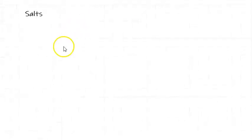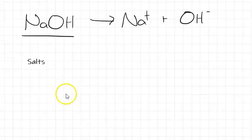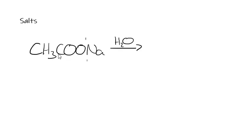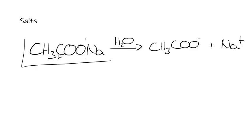The last type — and this is probably the one that comes up more than strong acids and bases — is salts. We looked at ethanoic acid earlier, but what if we had sodium ethanoate? If we put that in water, it will completely dissociate into its ions: CH₃COO⁻ plus Na⁺. We would identify that this is a salt, and therefore it completely dissociates.